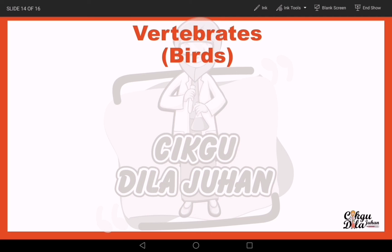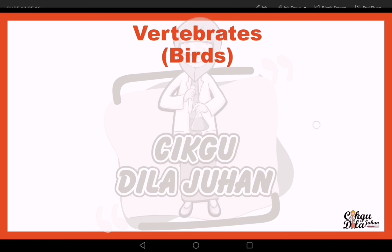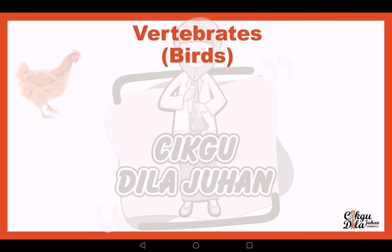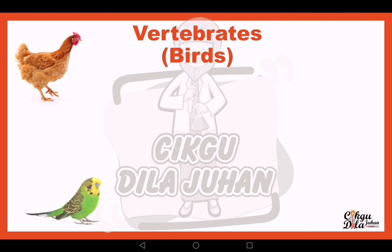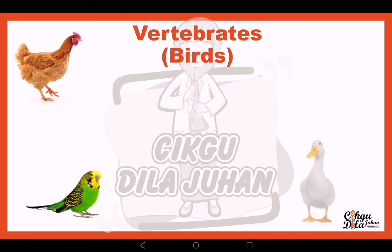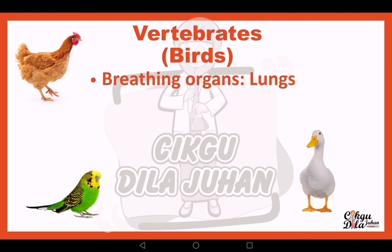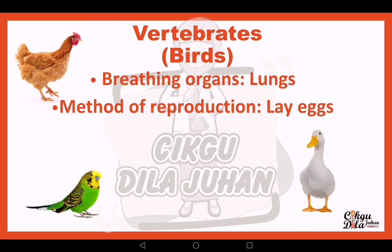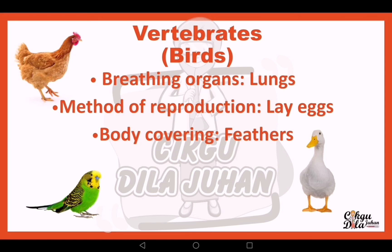The next type of vertebrate is birds — such as chicken, duck, and other birds. These animals breathe through lungs. They reproduce by laying eggs. Their body is covered with feathers, and their habitat is on land.